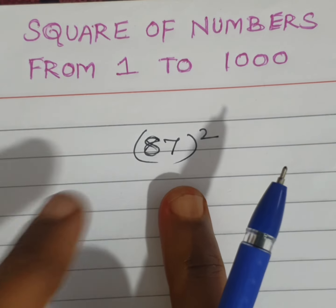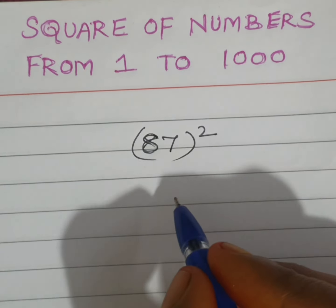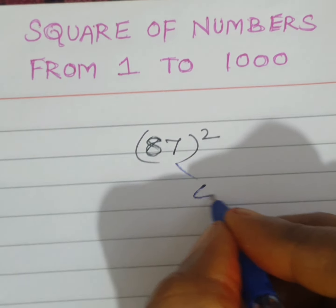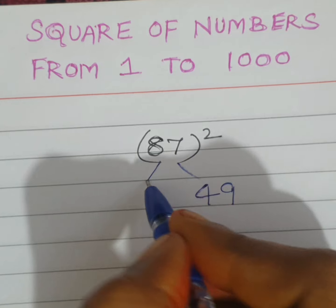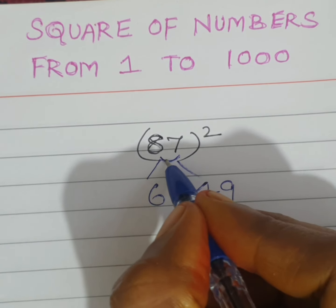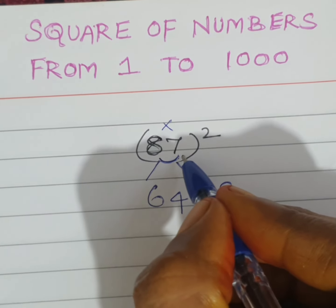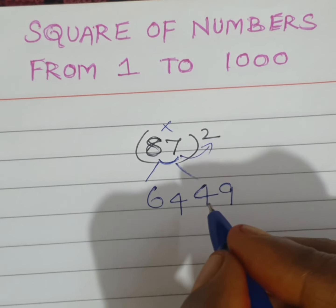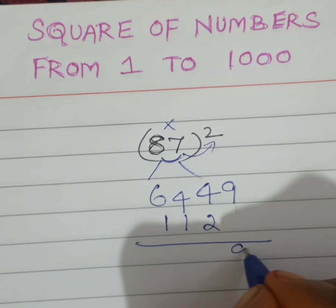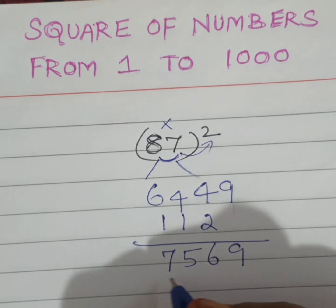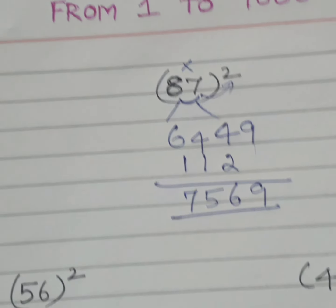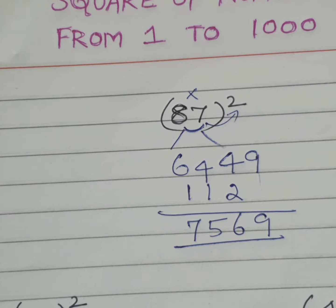Here I have taken some examples. 87 square — to find it easily, first we have to square 7. What is 7 square? 49. Then 8 square is 64. Now, 8 into 7 is 56, multiply by 2 is 112. Leave the first digit and write 112. Adding this, we get 7569. This is the square of 87.